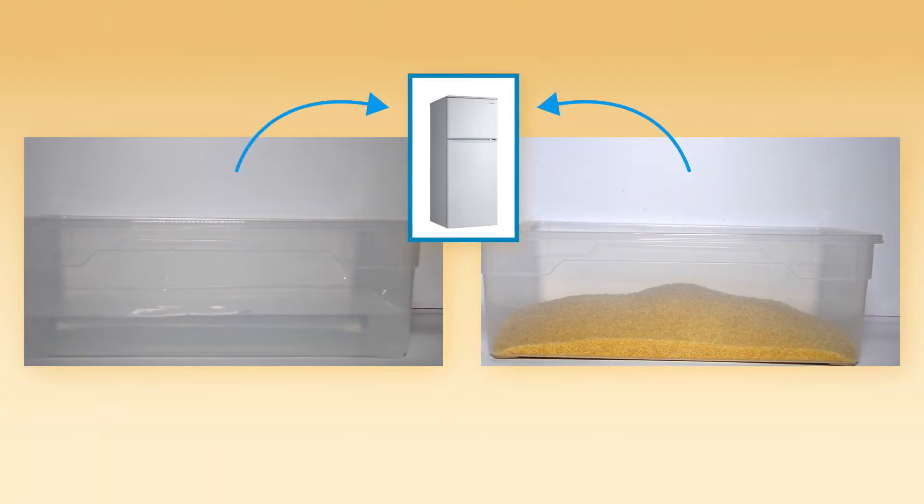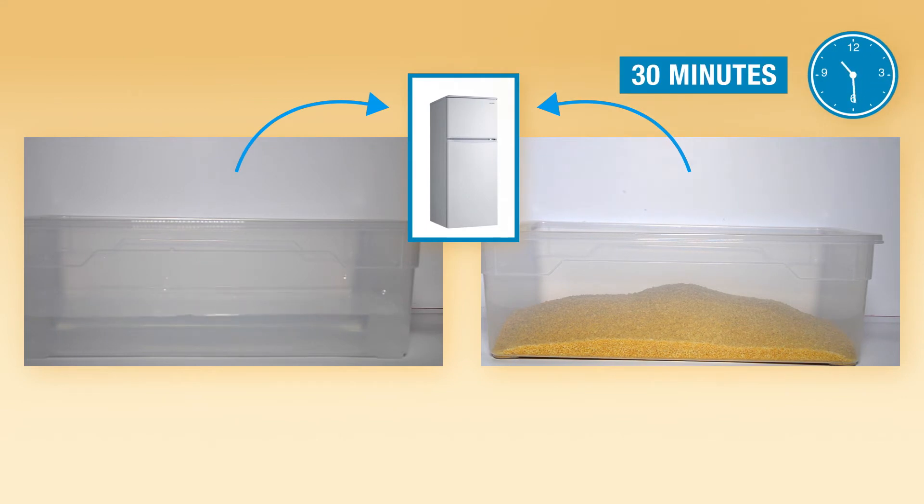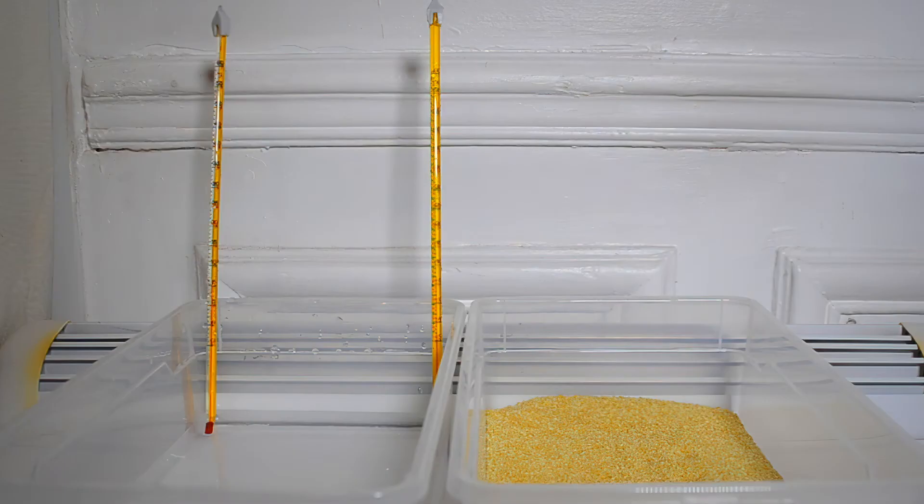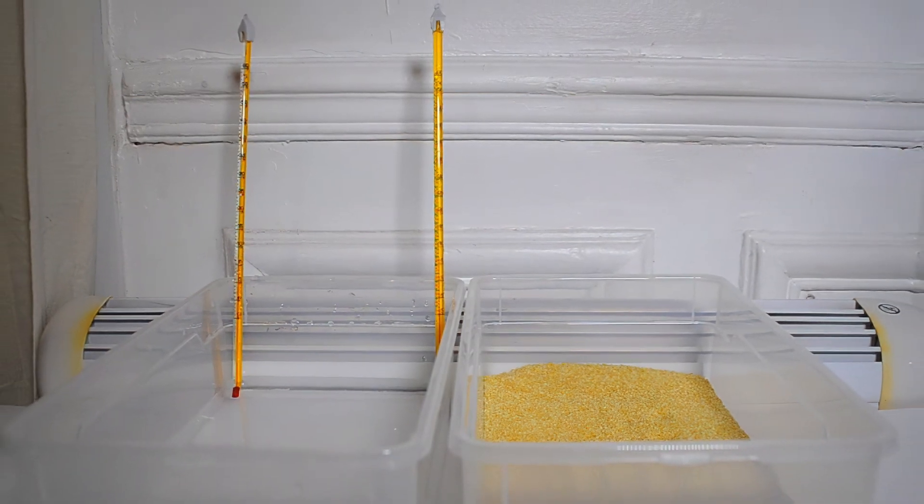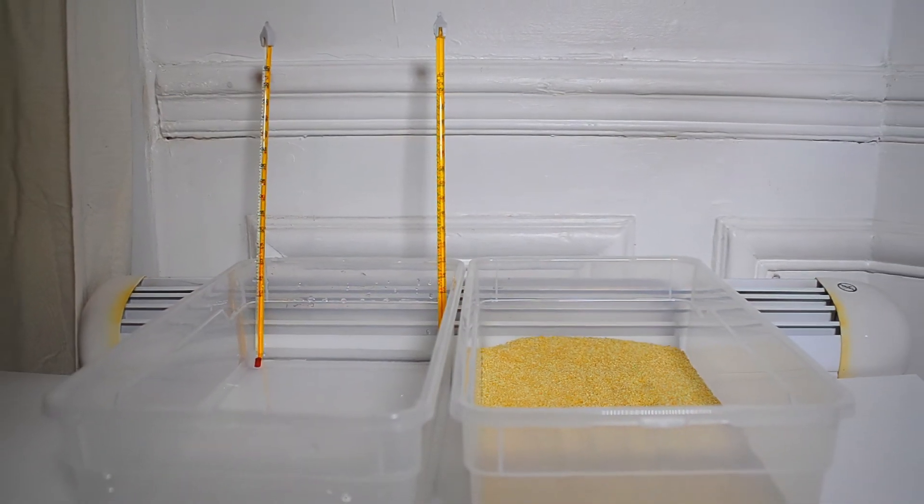We place the two containers in a fridge for 30 minutes. After refrigeration, we first place the two thermometers in the water to be sure that we start the experiment with the same temperature.